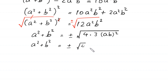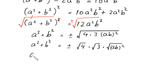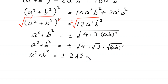So a squared plus b squared equals plus or minus root 4 times root 3 times root of (ab) squared, which gives a squared plus b squared equals plus or minus 2 times root 3 times a times b.